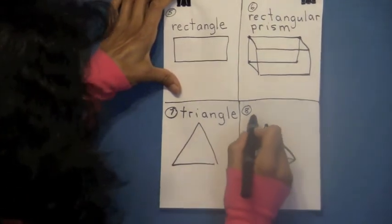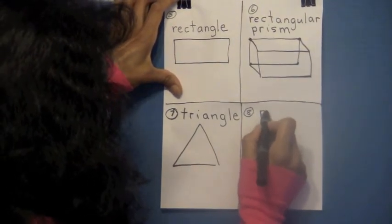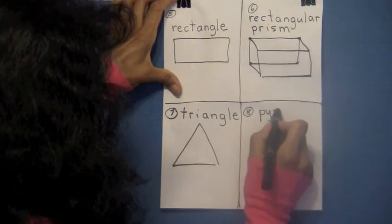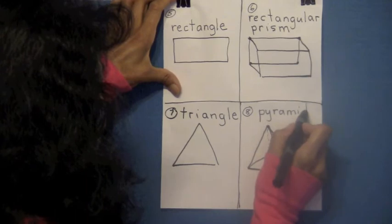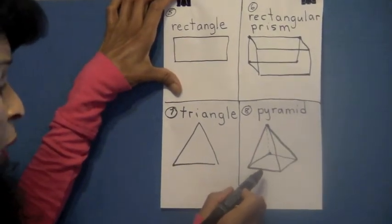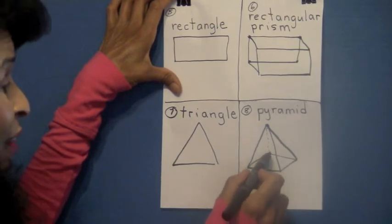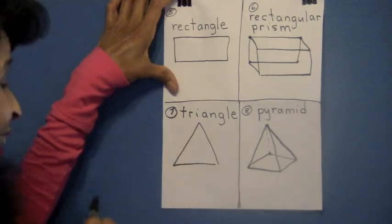Now, boys and girls, do you know what shape this is? It's a pyramid. Great. How do you spell pyramid? P-Y-R-A-M-I-D. Correct. Do you notice there are several different shapes in this pyramid? There are triangles and the base of it is a square. Great job, boys and girls.